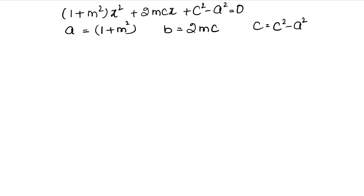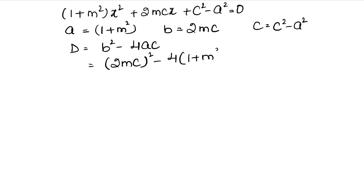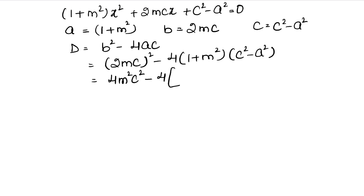D ka formula hota hai b² - 4ac. Toh B kya hua humara — (2mc)² minus 4 into A jo hai (1 + m²), aur C jo hai (c² - a²). Ye kitna aagya — (2mc)² that means four m²c², ab minus 4 as it is likh rahi hoon, aur apne ye do brackets pahle solve kar rahi hoon.